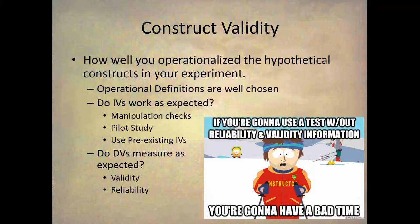With DVs, we often use pencil-and-paper tests or other types of tests, such as interview tests. Once we get to pencil-and-paper tests and other types of tests, we move into the area of psychometrics, which is the statistics of measuring things. In psychometrics we're going to be interested in two key concepts: whether or not a variable has good validity and good reliability. As I always say, if you're going to use a test without reliability or validity information, you're going to have a bad time.